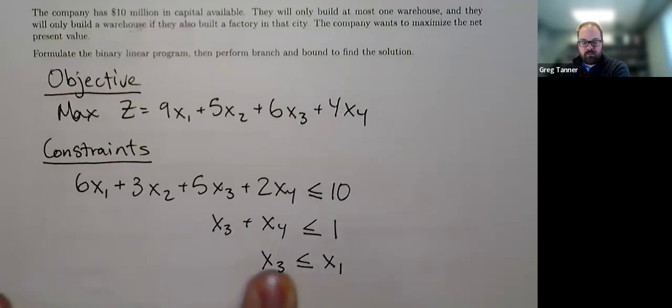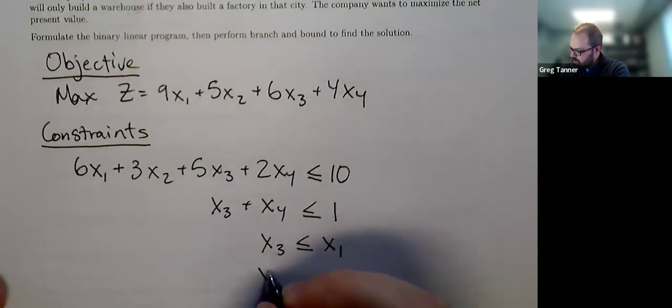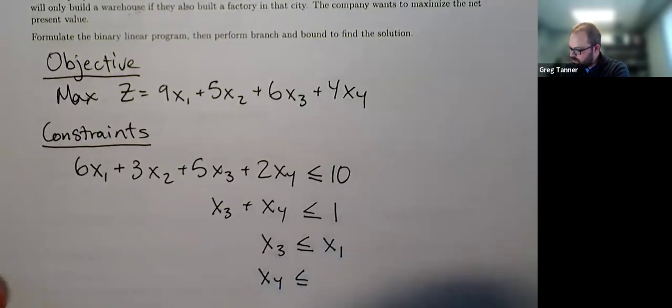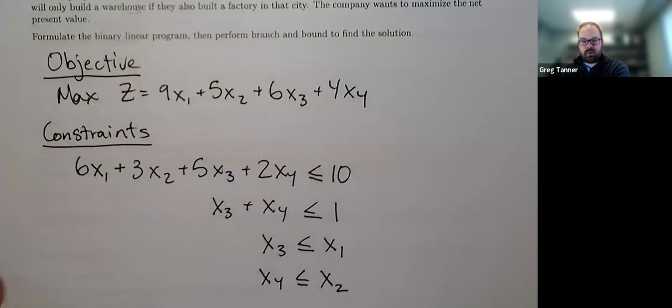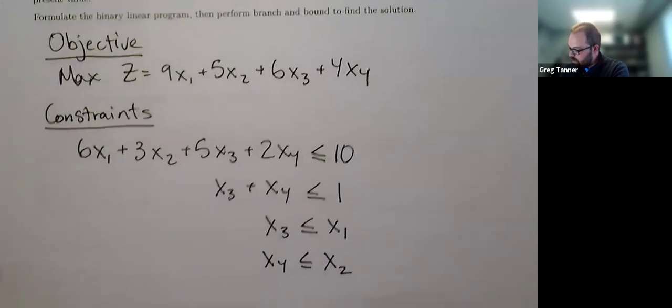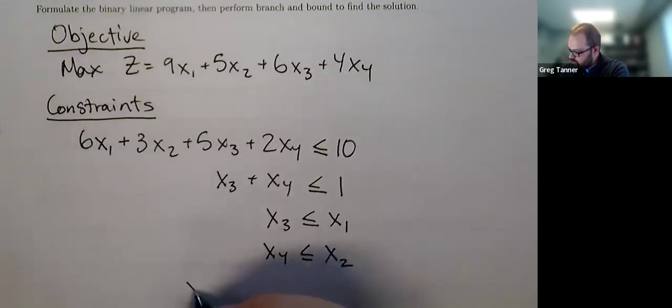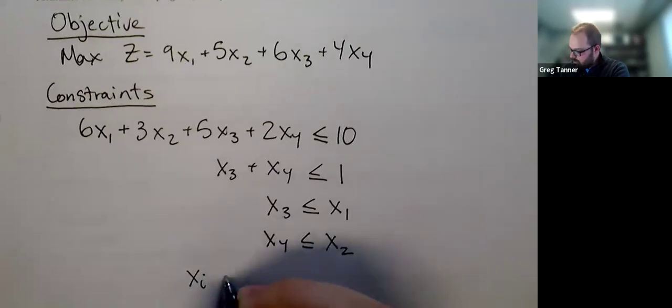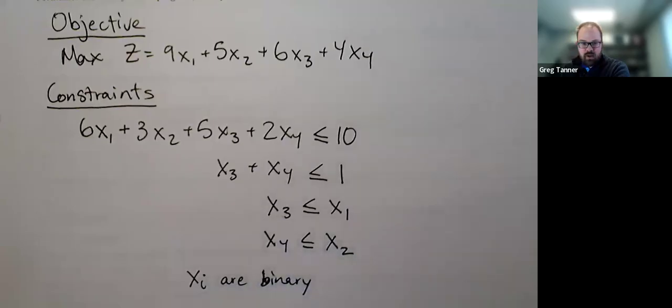Similar with x4 is the warehouse in Sioux Falls is contingent on the factory in Sioux Falls, which is x2. Okay, so those are all of our functional constraints. We then have the restriction that all of our xi are binary variables. So binary kind of combines integer and only being zero or one. So those are all our constraints.